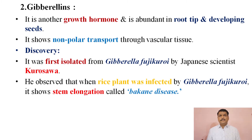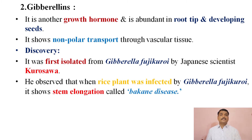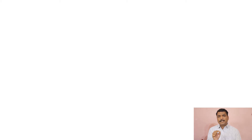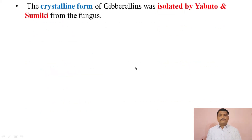Due to the name of the fungus, Gibberella fusikuroi, they termed the chemical produced by that fungus as gibberellins. The first crystalline form of gibberellins was isolated by Yabuta and Sumiki.